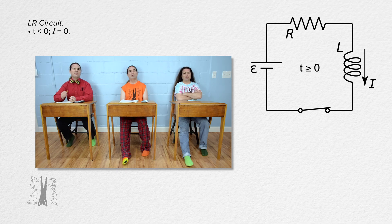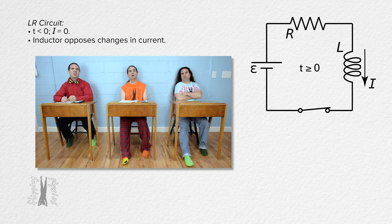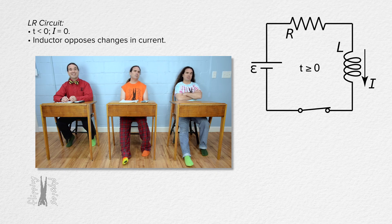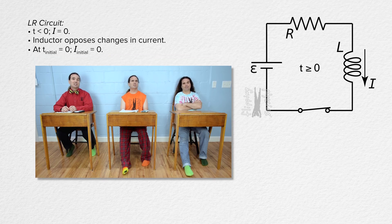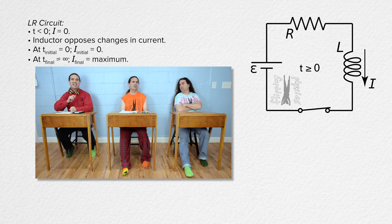I think you forgot about the inductor in the circuit. Inductors oppose changes in current — we talked about that last time. The inductor opposes changes in current, so because there was no current in the circuit before the switch is closed, right when the switch is closed, the current is initially zero. But after a long time, the current will have increased to its maximum current and will stay at that current.